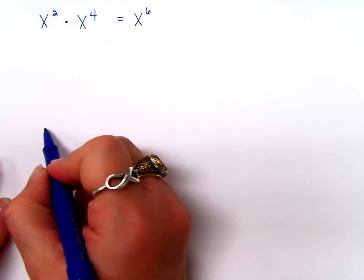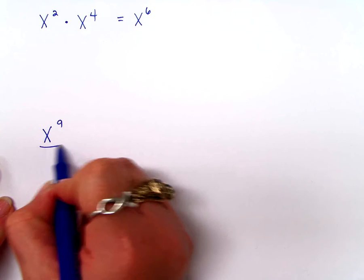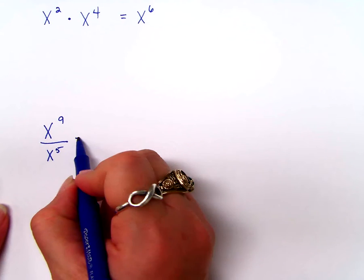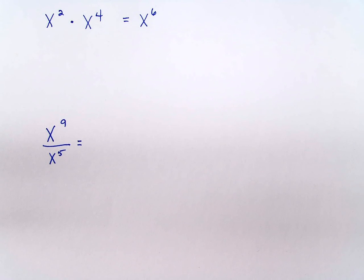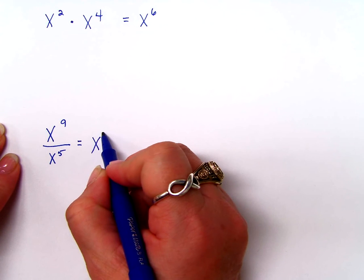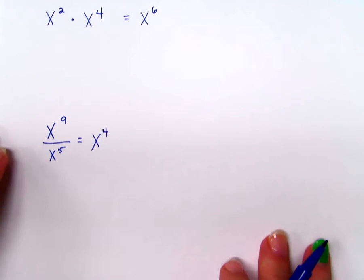What about X to the ninth divided by X to the fifth? Remember, you're not telling me what the answer is. You're telling me how to do it. When you're dividing like bases, you subtract your exponents. So, now tell me the answer. X to the fourth, good.